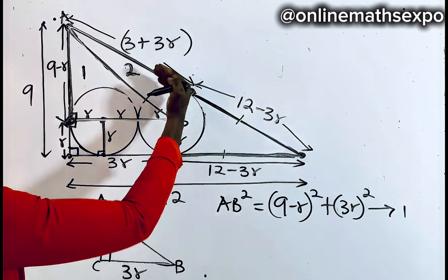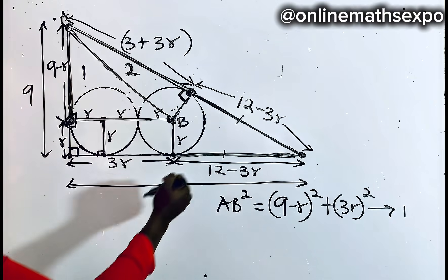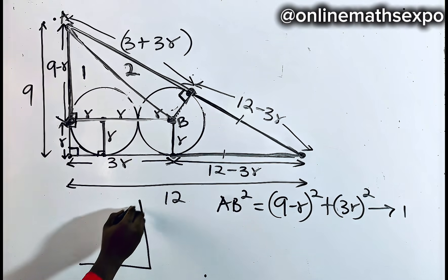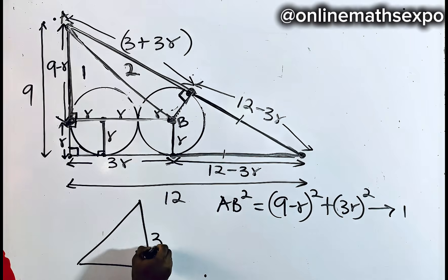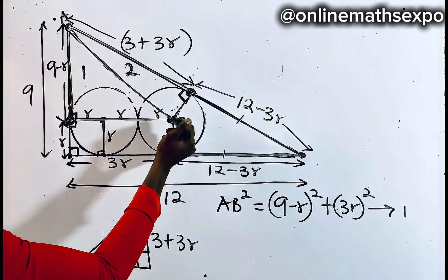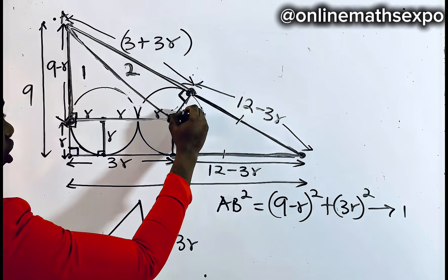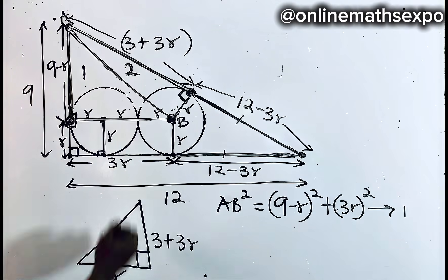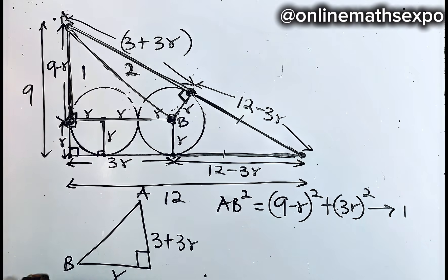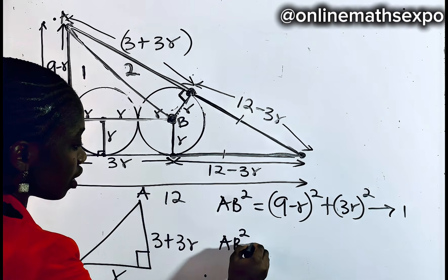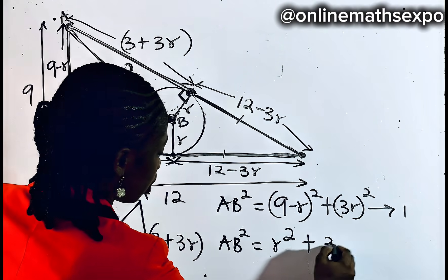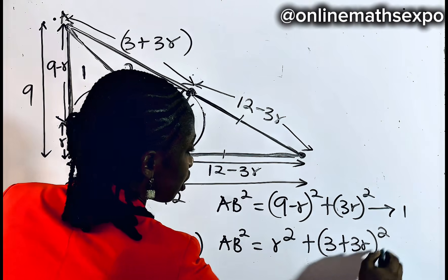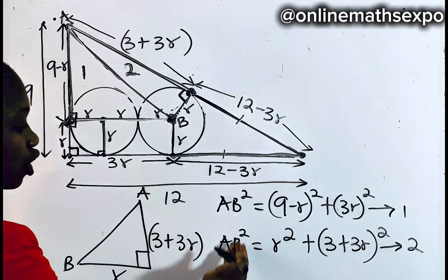Now bringing out shape two: it is right-angled here, the two legs are R and (3 plus 3R), and AB is again the hypotenuse. Applying the Pythagorean theorem: AB squared equals R squared plus (3 plus 3R) squared. Let's call this equation two. Since both equal AB squared, we set them equal to each other.